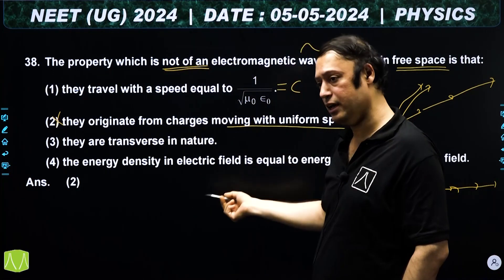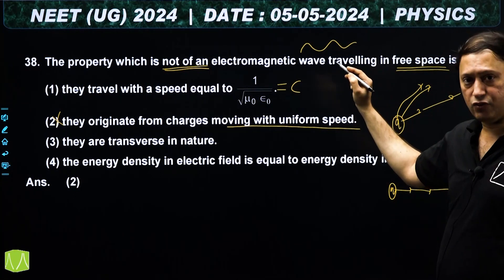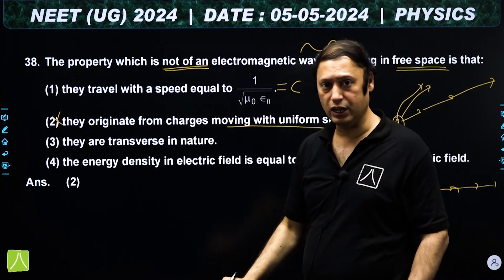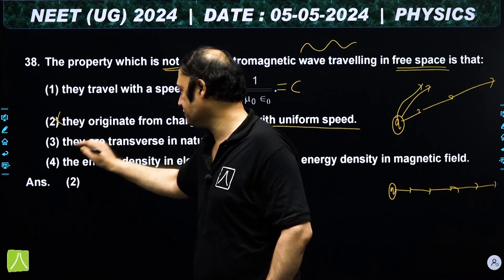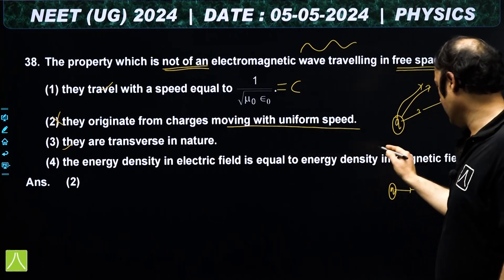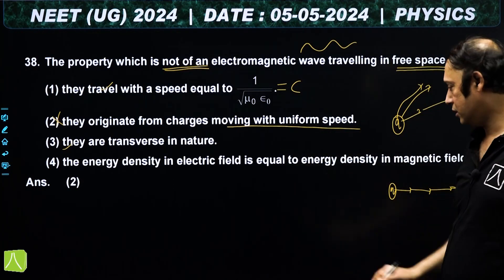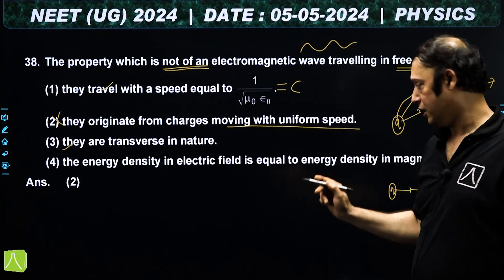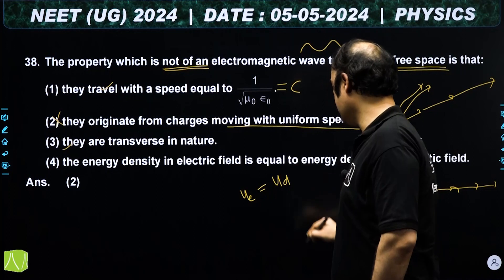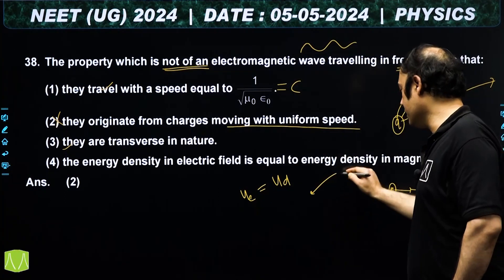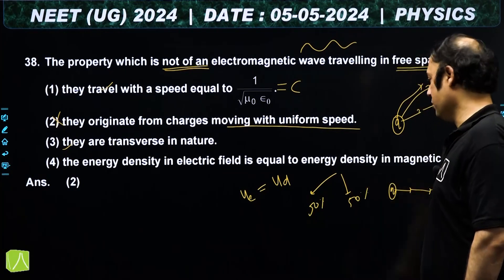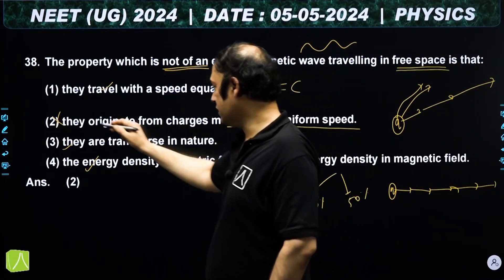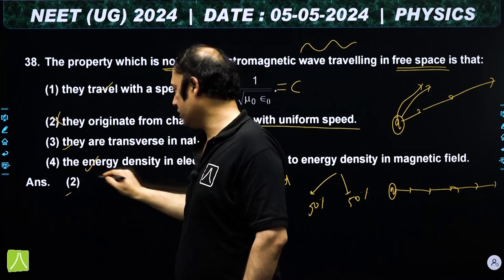The third option says electromagnetic waves are transverse — this is correct; E and B fields are perpendicular to the propagation direction. The fourth option says electric and magnetic energy density are equal in an electromagnetic wave — this is also correct. So the incorrect option is the second one.